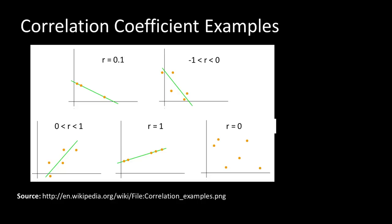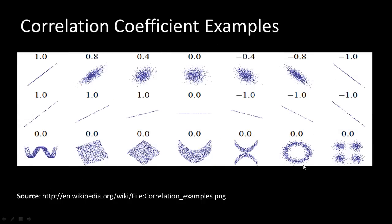When points are completely scattered the correlation coefficient is close to 0. As the trend improves from none to perfect, r increases from 0 toward 1. As correlation weakens from perfect negative toward zero, r increases from minus 1 toward 0. When points are scattered all over without a clear trend, r approaches 0.